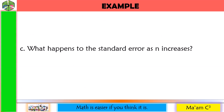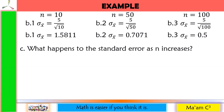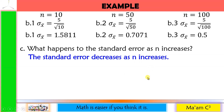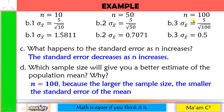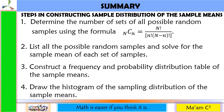Let us see what happens to the standard error as n increases. When n=10, the standard error is 1.5811; when n=50 it is 0.7071; and when n=100 it is 0.5. The standard error decreases as n increases. Letter D: which sample size gives a better estimate of the population mean? The answer is n=100, because the larger the sample size, the smaller the standard error of the mean.